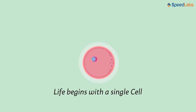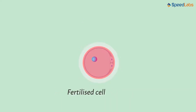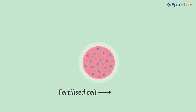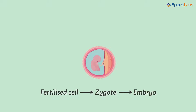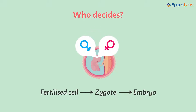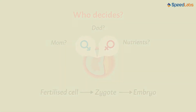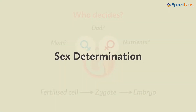Life begins with a single cell — for you, for me, for all of us. We know that the fertilized cell divides repeatedly to form a zygote, which will later take the form of an embryo. But wait! Who decides whether the embryo should develop into a male or a female individual? Is it the mom or the dad, or is it the nutrients made available during growth? In this video, let us study how the sex of the growing embryo is determined.